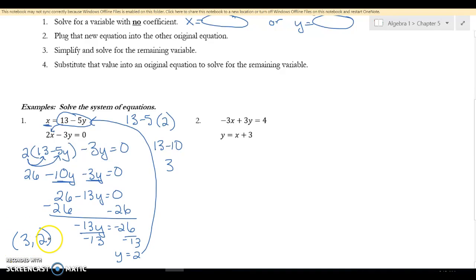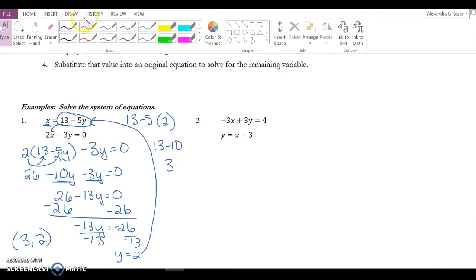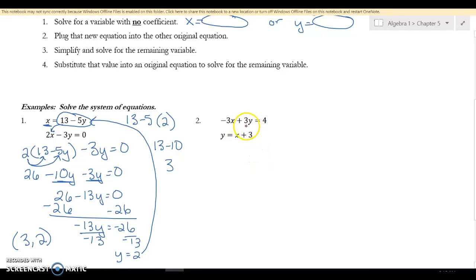Okay, so let's try the next one. This time I don't have an X equals like I had here. I had Y equals, so that's what I'm going to circle. Because it's Y, I'm going to plug it in for Y. So I'm going to write negative 3X plus 3, and instead of Y I'm going to write the parentheses equals 4. Inside the parentheses I'm going to put X plus 3.